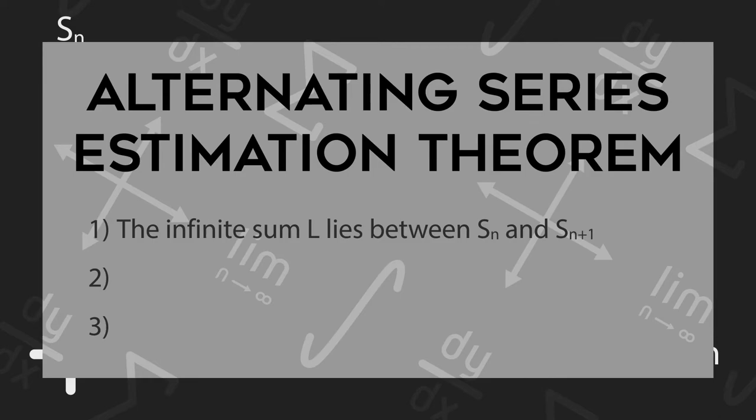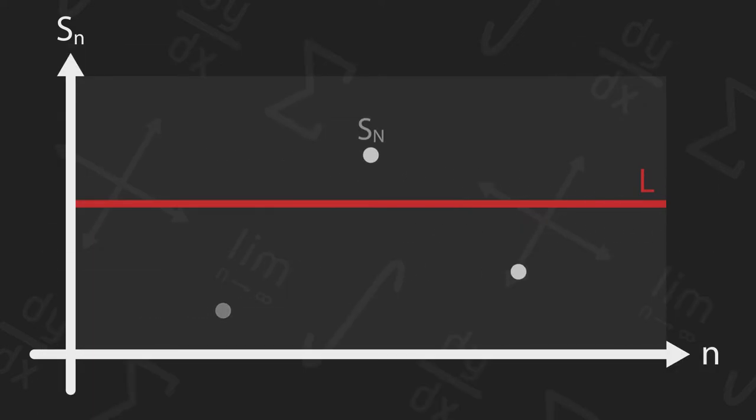Let's continue. We now define the error of the partial sum at n as the distance between the infinite sum L and that partial sum. It is basically a measurement of how far off we are from the true value of this infinite series.